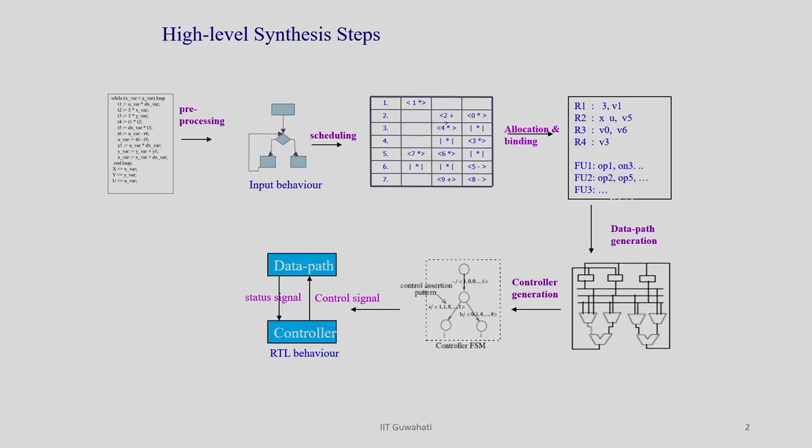Welcome everyone. In today's class we are going to discuss about register allocation and binding. If you remember, high-level synthesis converts C code to an equivalent register transfer level behaviour and consists of various phases like preprocessing, scheduling, allocation binding, datapath and control generation, and finally generates the RTL. We are now in the allocation and binding phase.